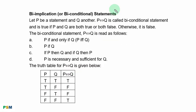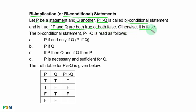Next we have biconditional statements. Let P be a statement and Q be another statement. The biconditional statement is true if P and Q are both true or both false. It is read as: P if and only if Q, that is P ↔ Q.